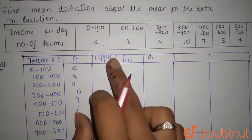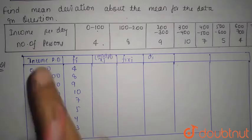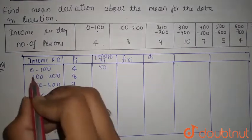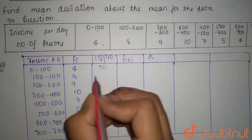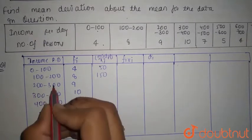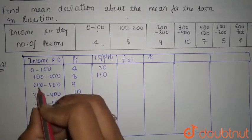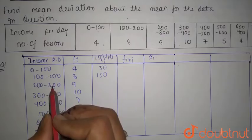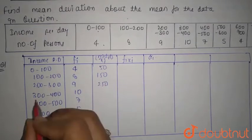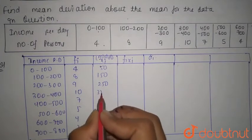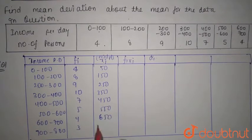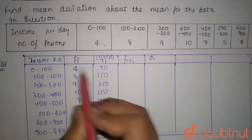0 plus 100 divided by 2 is 50, the midpoint. 100 to 200 in between is 150. 200 to 300 in between, the midpoint will be 200 plus 300 by 2, that is 250.